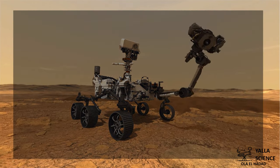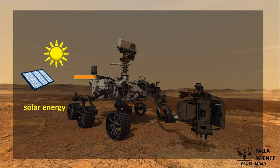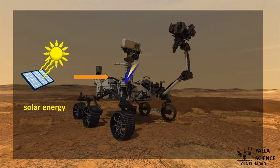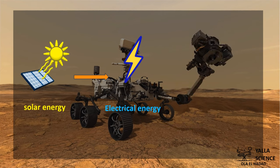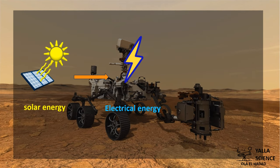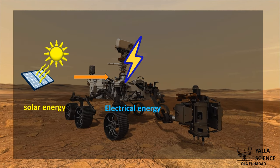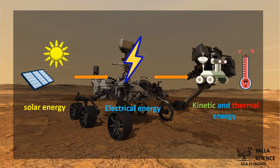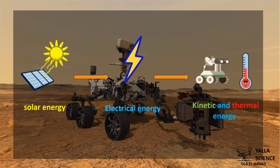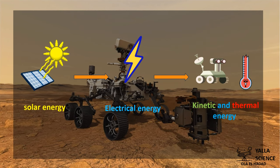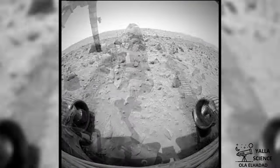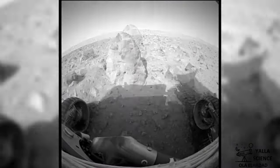The Mars Rover uses batteries and solar panels. The solar panels charge the batteries. Because it is too distant from the Earth to recharge or change these batteries, the solar panels on the rover convert solar energy into electrical energy. This electrical energy is converted into kinetic energy and thermal energy as the rover moves across the Mars surface and carries out its activities.